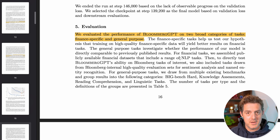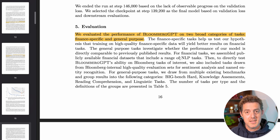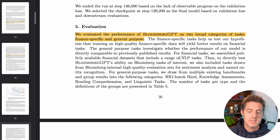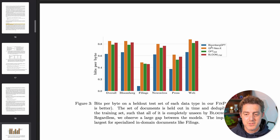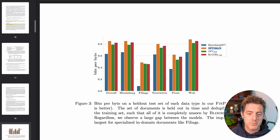Let's talk about evaluation. Bloomberg GPT is evaluated in two ways. Let's remember that it is a mix of really specific financial data and general purpose data. And so they've evaluated it the same way — one on specific finance-related tasks, and then one on more general purpose tasks. They compared Bloomberg GPT to NeoX, to OPT, and to Bloom. This is a bits-per-byte graph, where the blue is Bloomberg GPT.